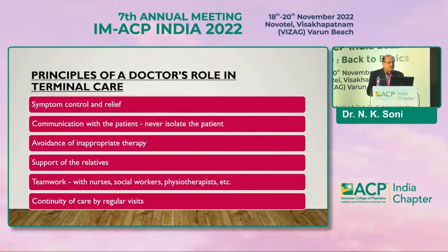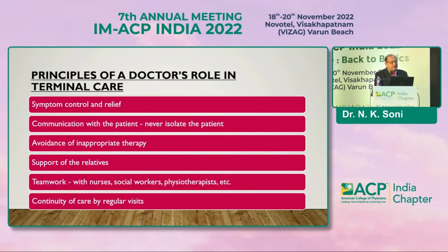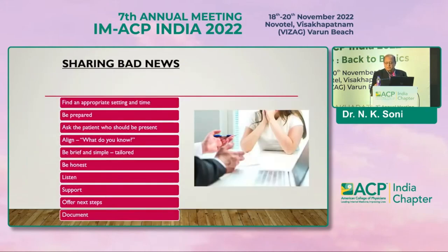The principles of a doctor's role in terminal care: there should be an attempt at symptom control and relief for the patients, and we should communicate properly — never isolate the patient. Patients should be involved in the discussion and explanation of their disease process and care. Avoidance of inappropriate therapy is very important. Support of the relatives is a teamwork involving hospital staff, physiotherapists, social workers, the critical care team, and the admitting consultant. Continuity of care with regular visits gives moral support to both patients and relatives.